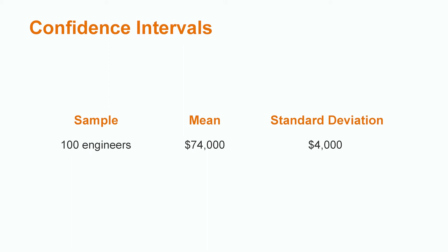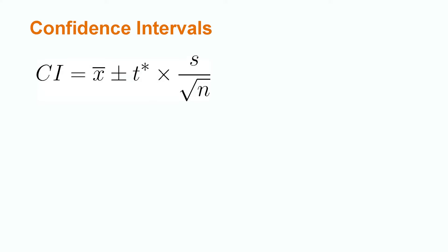Because we computed our standard deviation from a sample, we are going to use the confidence interval formula for one population mean when the population standard deviation is unknown. The formula is x̄ ± t* × s/√n. x̄ is our sample mean, which would be 74,000. n is our sample size, which is 100, and s is our standard deviation of 4,000.